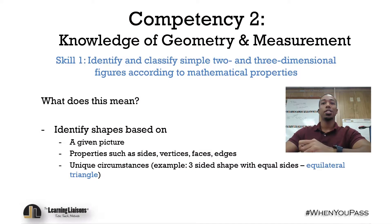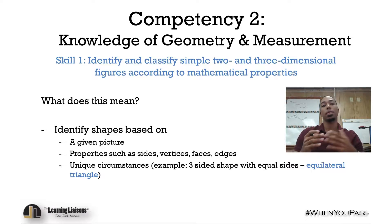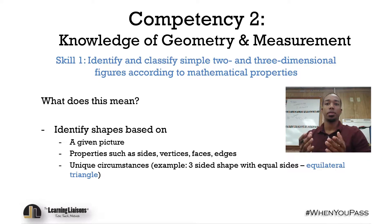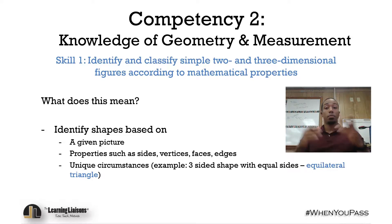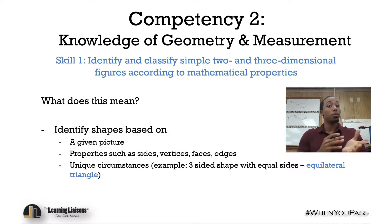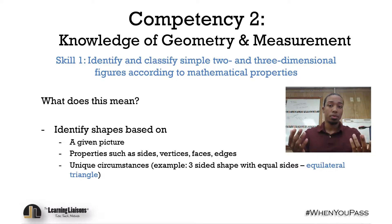Competency two, skill one: identify and classify simple two and three-dimensional figures according to mathematical properties. There are a couple of things we can be asked to do here. First, we're given a picture — whether it's of a two or three-dimensional object — and we'll be asked to basically name the shape. That's one type of problem we'll see.